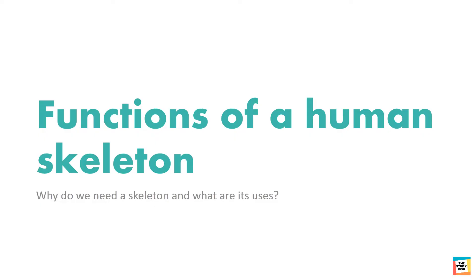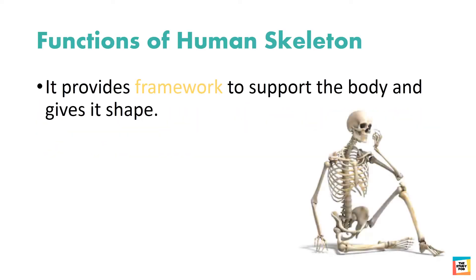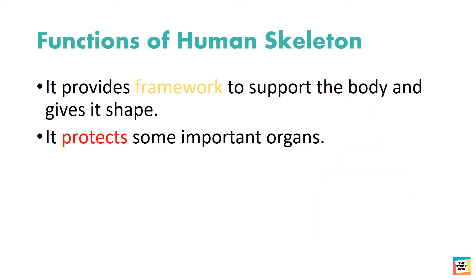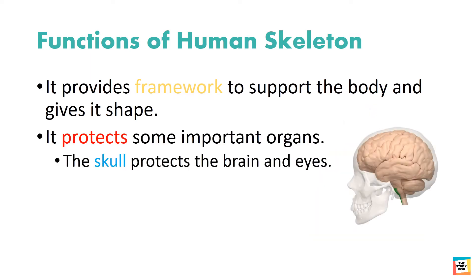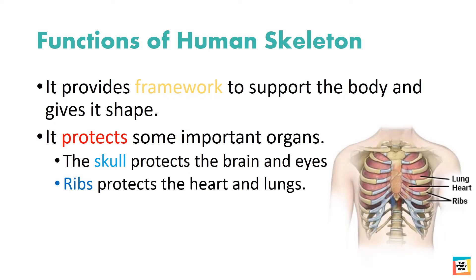Why do we need a skeleton and what are its uses? Let's learn about the function of a human skeleton. A skeleton provides a framework to support the body and gives it shape. It also protects some important organs. For example, the skull protects the brain and eyes, and ribs protect the heart and lungs.